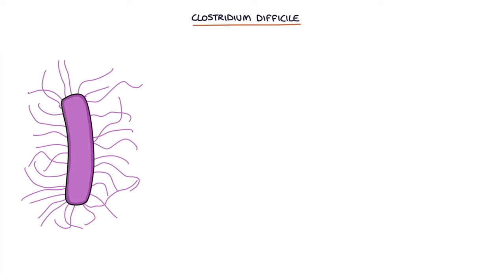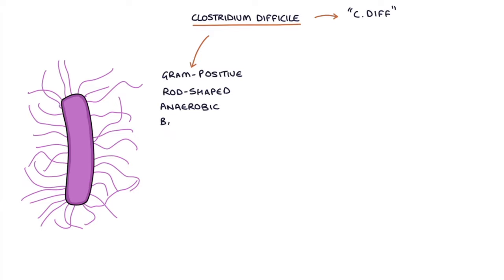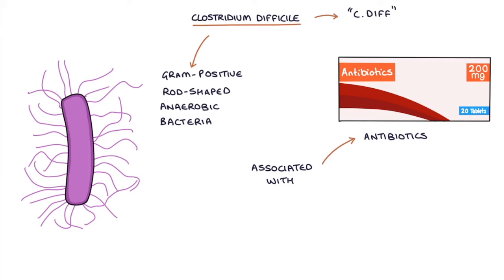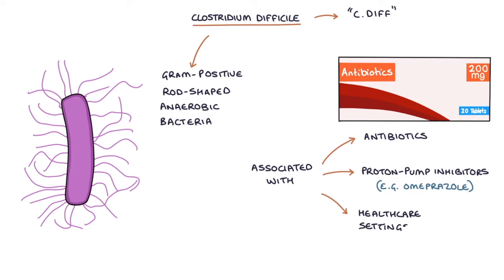Clostridium difficile, often called C. diff, is a gram-positive, rod-shaped, anaerobic bacteria. Infection is associated with the repeated use of antibiotics, as well as proton pump inhibitors such as omeprazole, and healthcare settings.